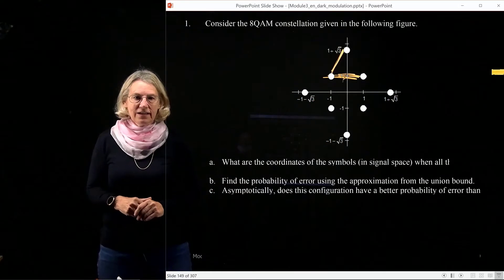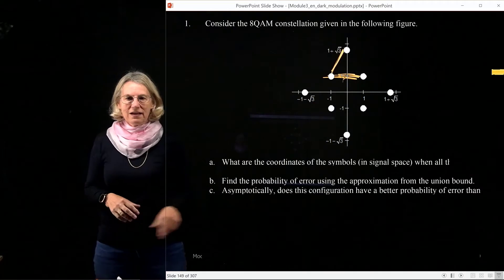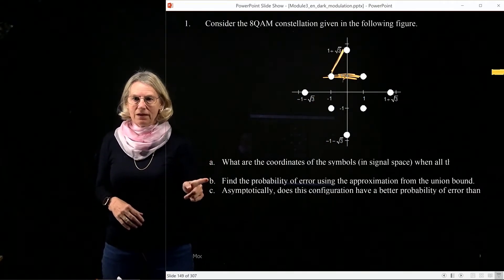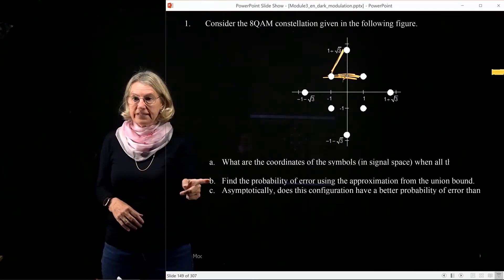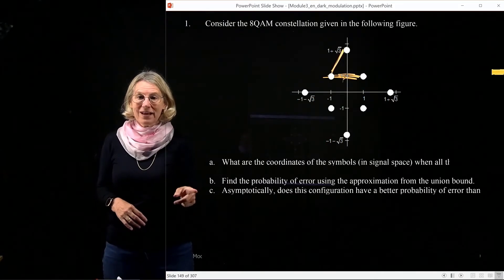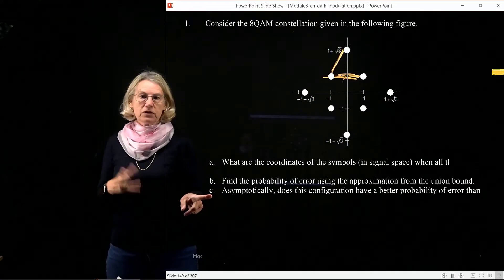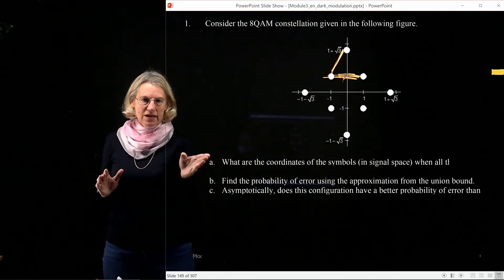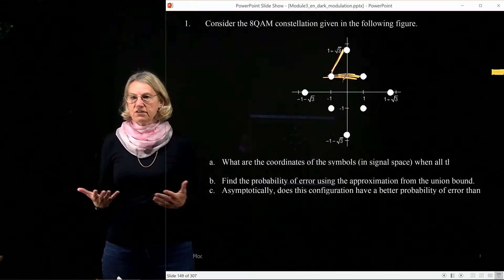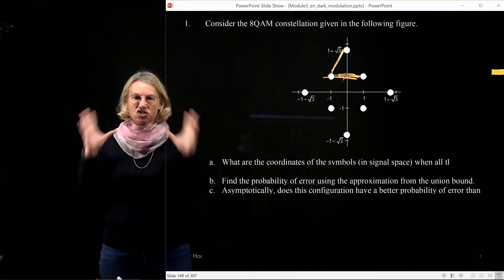And then the last part is, asymptotically, does it have better probability of error? First you put it into signal space, then you can find d_min. With d_min you can get probability of error. Now you want to compare this with the performance of another modulation format, usually compared to QPSK. This question is testing your ability to do these different steps for an arbitrary QAM modulation constellation.